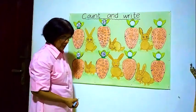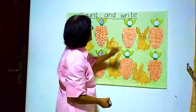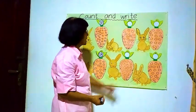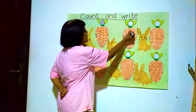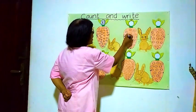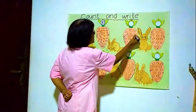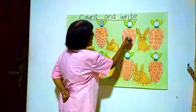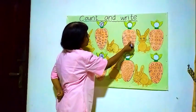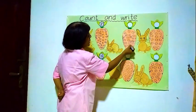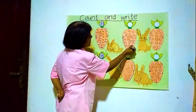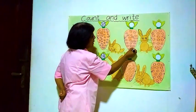Now we'll go to the next one — this carrot. We'll see how many balls are inside this carrot. We'll start from here. One, two, three, four, five, six, seven, eight, nine, ten, eleven, twelve, thirteen, fourteen, fifteen, sixteen, seventeen, eighteen, nineteen, twenty, twenty-one, twenty-two.